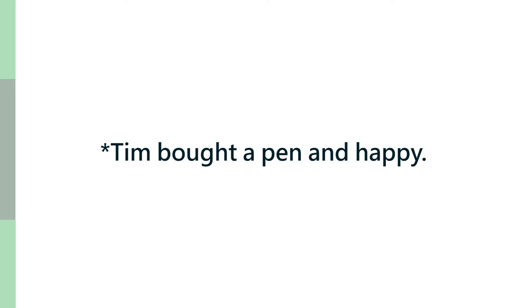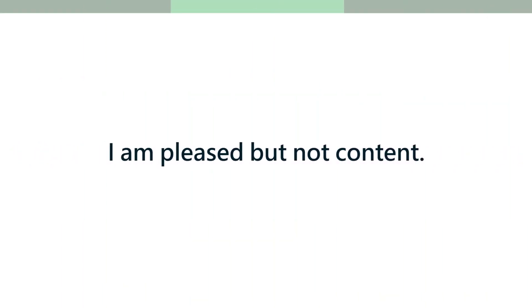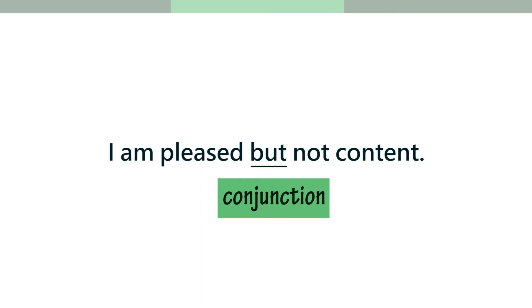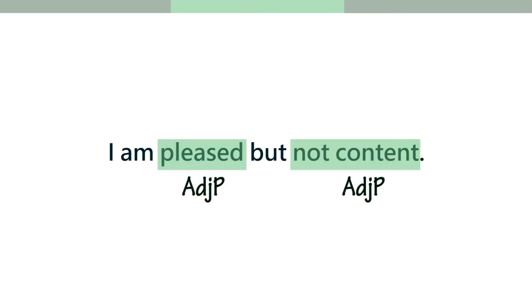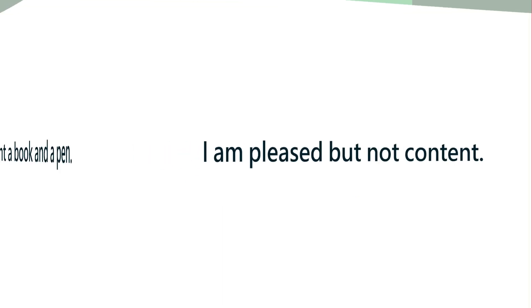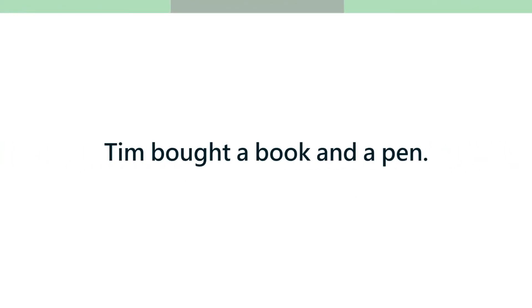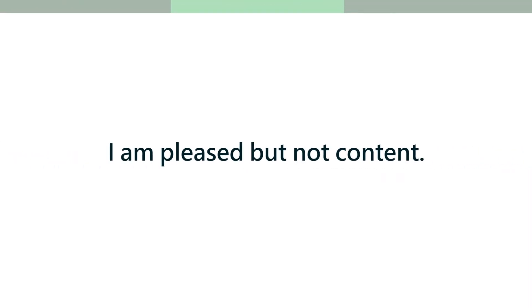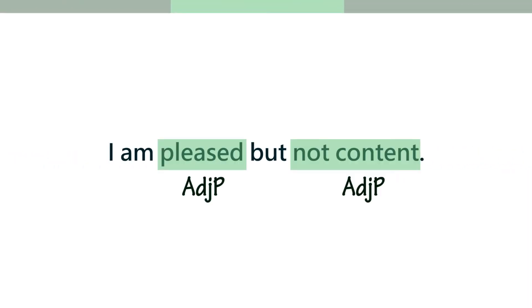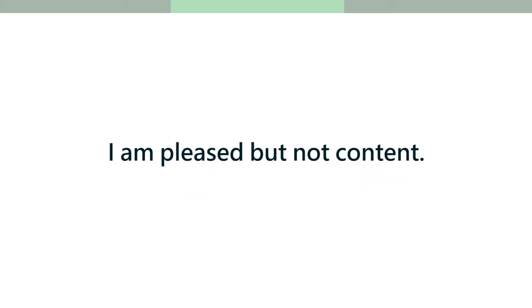If I say 'I am pleased but not content,' you see 'pleased' and 'not content' are both adjective phrases — the sentence is totally fine. So in the first correct example two noun phrases were coordinated, and in this correct example two adjective phrases are being coordinated.